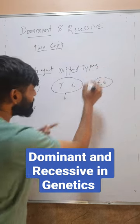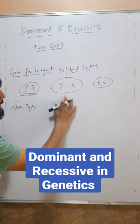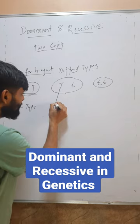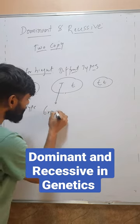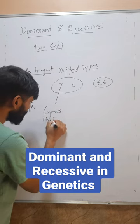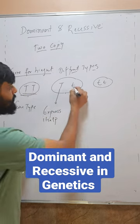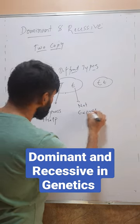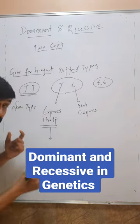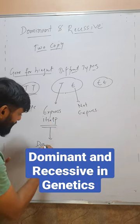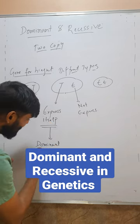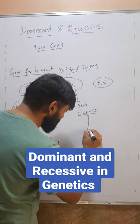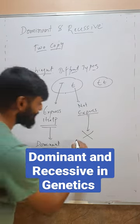So here, different types of alleles are present. If different types of alleles are present, then out of the two, one will express itself and the other will not express. The allele that will express itself will be called dominant, and the allele that will not express will be called recessive.